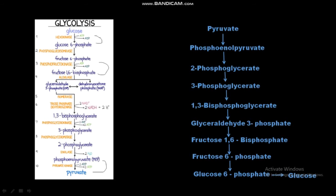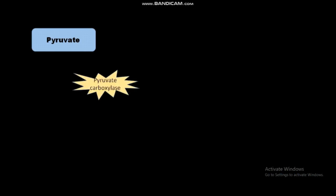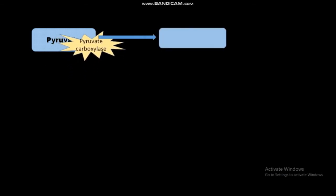These three steps require special mechanisms and specific enzymes to be reversed in gluconeogenesis. The rest of the steps of glycolysis are reversed by the same enzymes acting in glycolysis. For the reversal of pyruvate into phosphoenolpyruvate (PEP), pyruvate carboxylase acts on pyruvate and converts it into oxaloacetate. This process occurs inside the mitochondria of the cell.